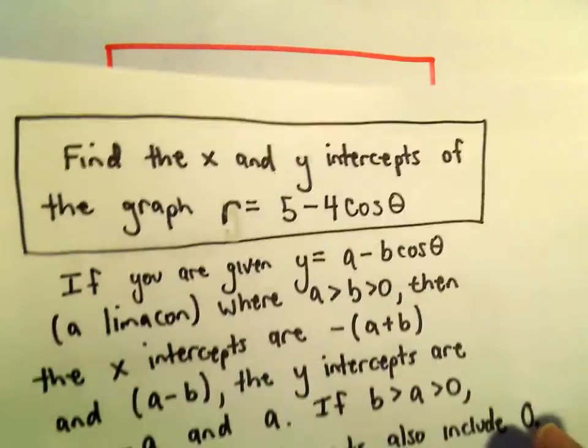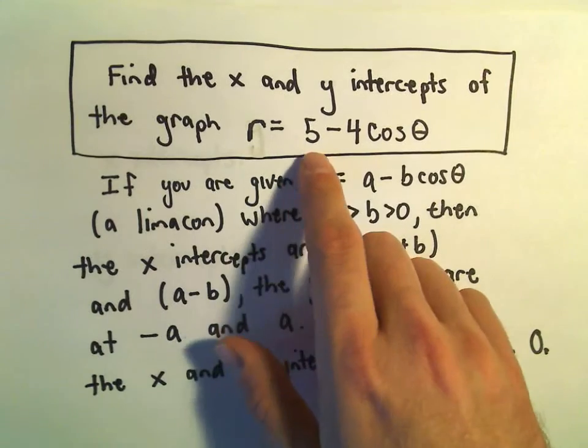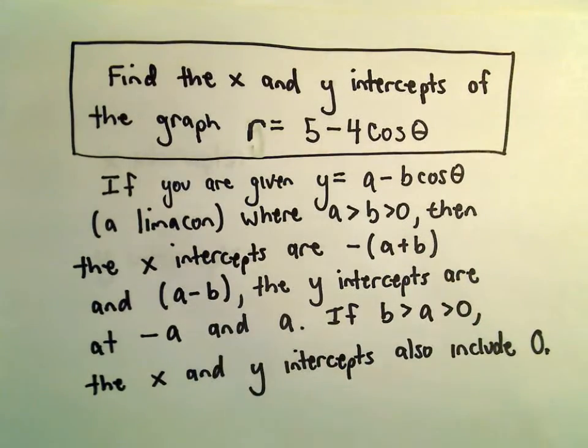Okay, so one quick question here. We want to find the x and y intercepts of this graph: r = 5 - 4cos(θ).